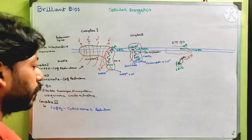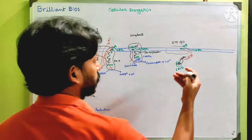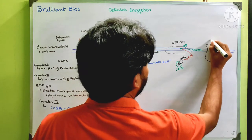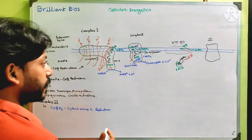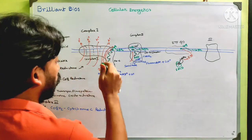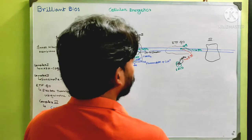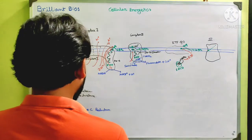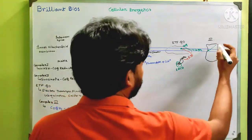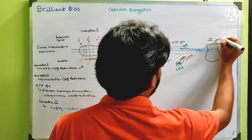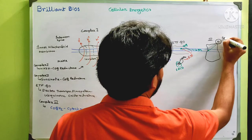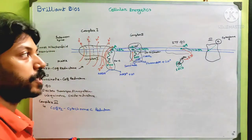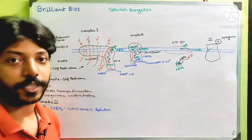Let me draw the Complex 3 structure. CoQH2 coming from Complex 1, Complex 2, or ETF-Q arrives here and releases electrons that pass to the ultimate electron acceptor of Complex 3, which is cytochrome c. The cytochrome c then eventually continues through the electron transport chain into Complex 4.